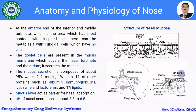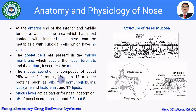The cell types include basal cells, non-ciliated columnar cells, ciliated columnar cells, the mucosa cilia, the goblet cell, and the basal membrane. The goblet cells are present in the mucous membrane covering the nasal turbinates and the atrium, and they secrete the mucus. The mucous secretion is composed of about 95 percent water, 2 percent mucin, 1 percent salts, and 1 percent other proteins such as albumin, immunoglobulin, lysozyme, and lactoferrin, and 1 percent lipid.